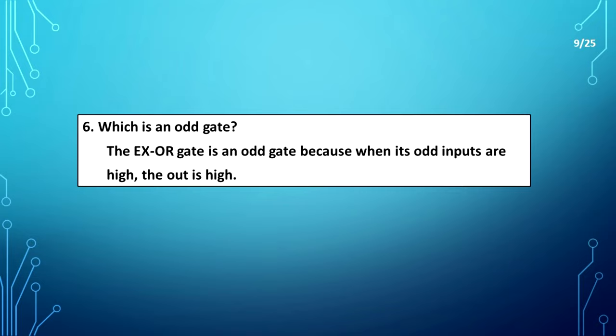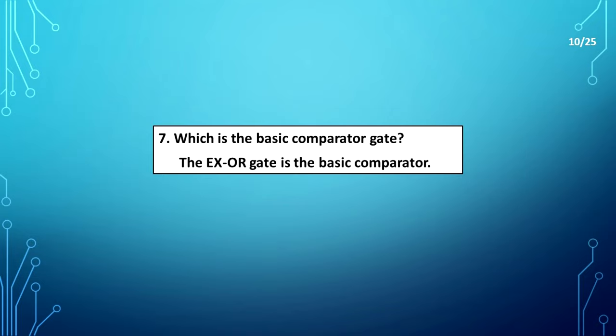Which is an odd gate? The XOR gate is an odd gate because when its odd inputs are high, the output is high. Which is the basic comparator gate? The XOR gate is the basic comparator.